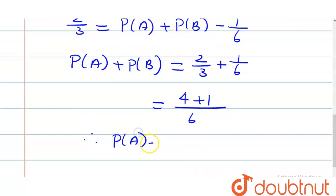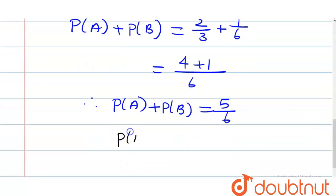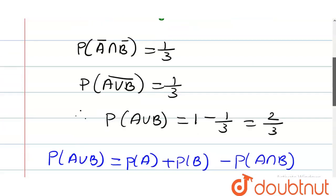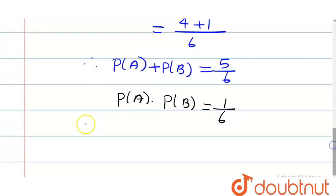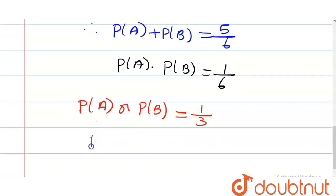And P(A) into P(B) is equal to 1/6. That means either P(A) equals 1/3 and P(B) equals 1/2, or P(A) equals 1/2 and P(B) equals 1/3.